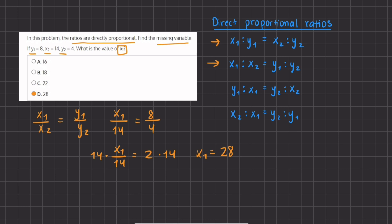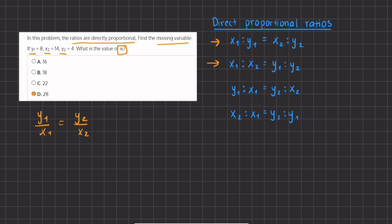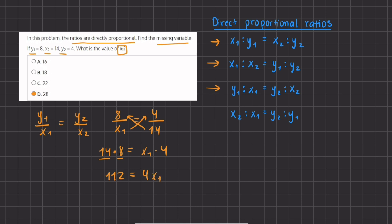Using our third formula, we have y1 divided by x1 equals y2 divided by x2. Plugging in: y1 is 8, x1 is our missing variable, y2 is 4, and x2 is 14. Cross-multiplying gives 14 times 8 equal to x1 times 4. Since 14 times 8 gives us 112, we have 112 equals 4x1. Dividing by 4 on both sides gives x1 equal to 28, just like our previous answers.